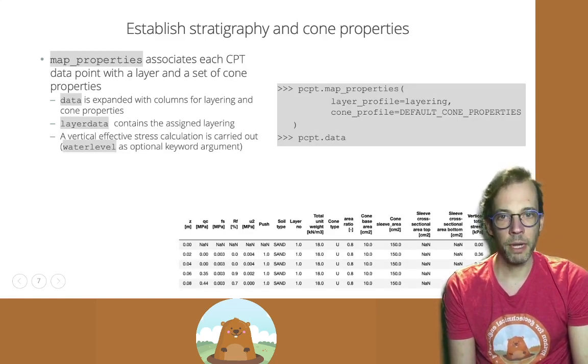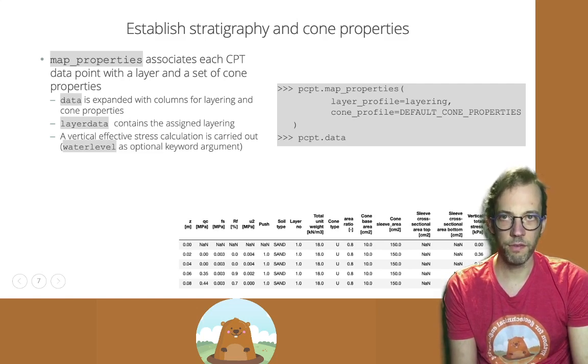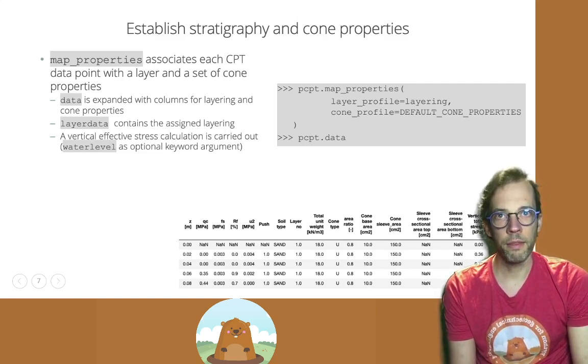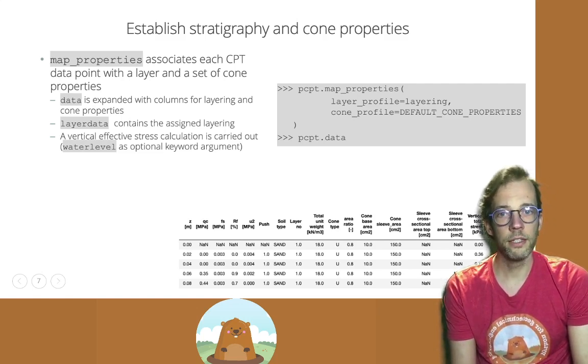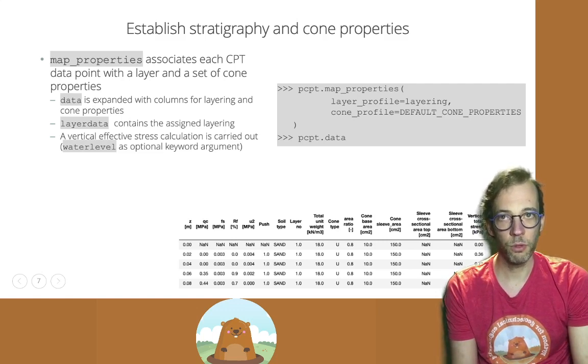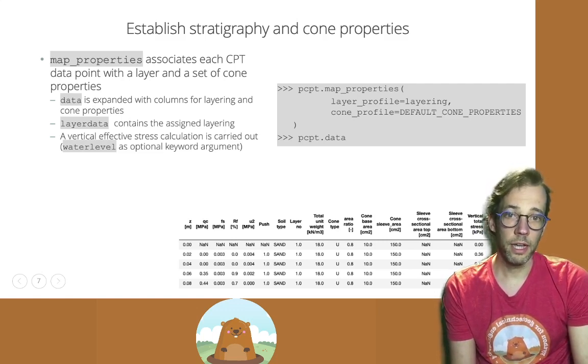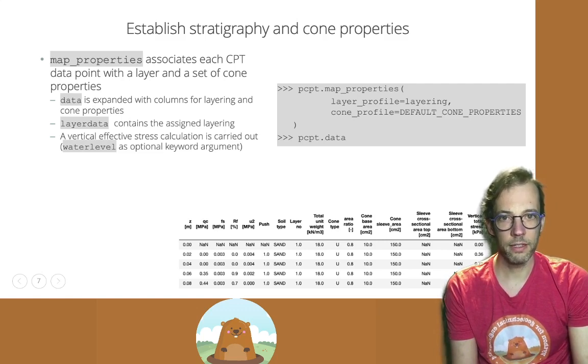The map properties method was developed specifically for that. And with that method, we simply say for the CPT, so PCPT in this code example is the PCPT processing object. We execute the map properties method on that object, and we specify that the layering is contained in our soil profile layering, and the cone profile is contained in our cone properties soil profile.